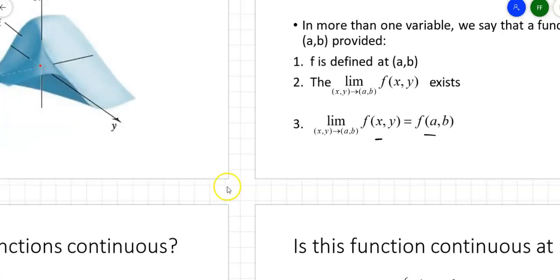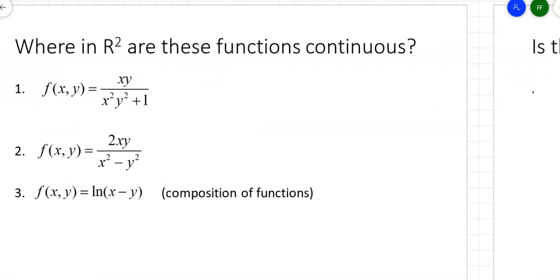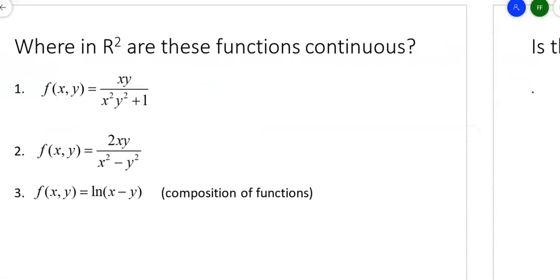How does this work? Let's take a look. Where in R2 are these functions continuous? The first one doesn't seem to have any problem. That denominator is never going to be zero. There's nothing crazy like logs trying to take logs of negative numbers or radicals ending up with negatives under the radical. So this first one is continuous everywhere.